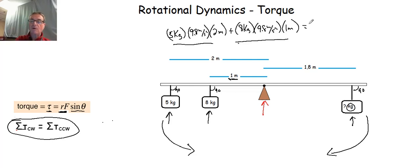They're going to have to equal our clockwise torques. Well, what's the mass that we have on the right hand side? Well, it's unknown. So we're just going to call that x kilograms times 9.8 meters per second squared times the distance it is from the center of rotation. And that's 1.8 meters. So now we can just calculate and solve.